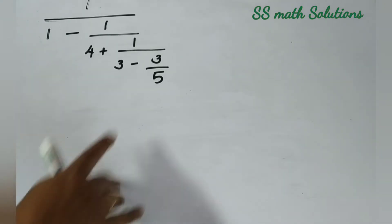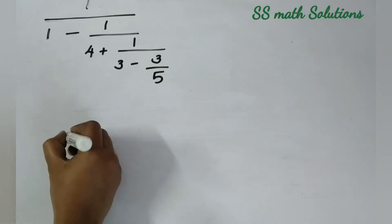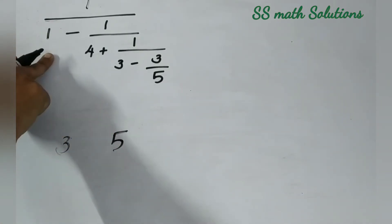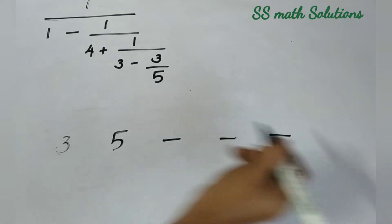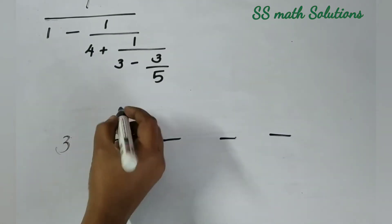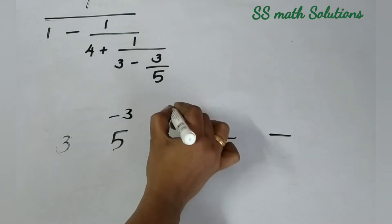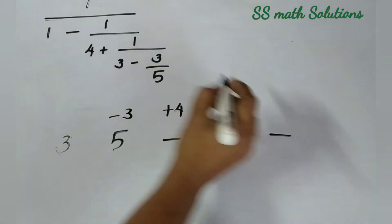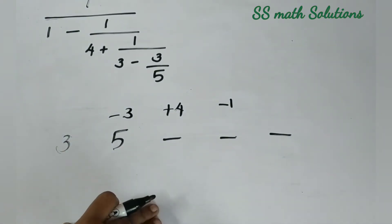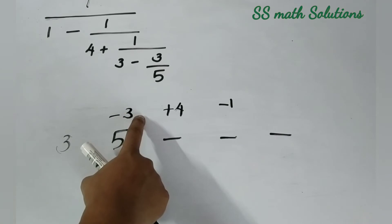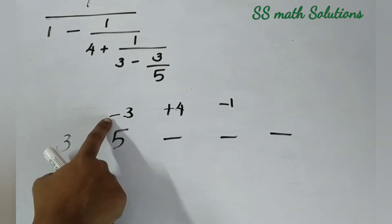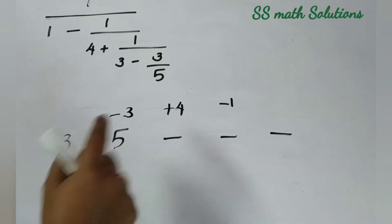Firstly we take 3 and 5 here. Count 1, 2, 3 numbers — so we get 3 extra numbers. We will start writing from above the second number: minus 3, plus 4, minus 1. Arrange like this. Now 5 into 3 is 15. The sign is minus, so 15 minus 3 is 12.